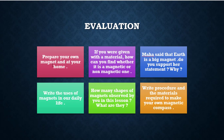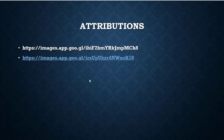Now for evaluation: Prepare your own magnet and magnetic compass at home. If you were given a material, how can you find whether it is magnetic or non-magnetic? Maha said that Earth is a big magnet — do you support her statement? Why? Write the uses of magnets in our daily life. How many shapes of magnets did you observe in this lesson? What are they? Write the procedure and materials required to make your own magnetic compass. Okay children, I will meet you again with another topic. Until then, bye! Thanks for watching.